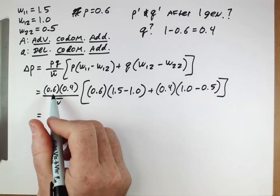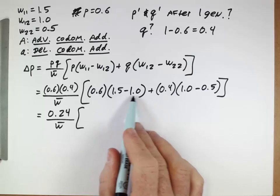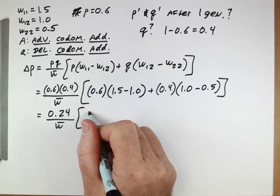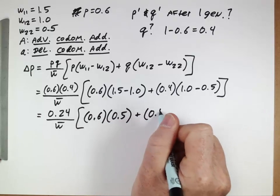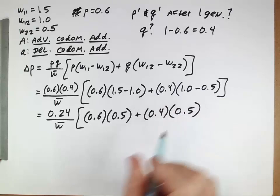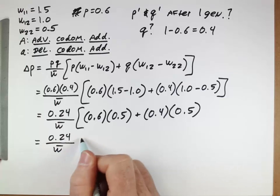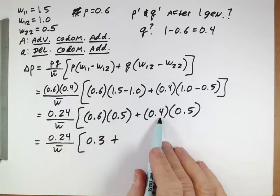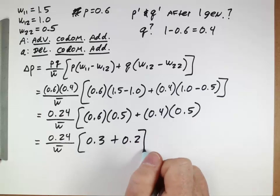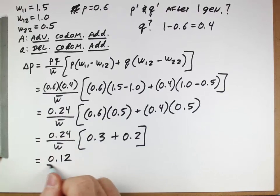So we can simplify the top part there, becomes 0.24 over w̄. This becomes 0.5, so we have 0.6 times 0.5, plus 0.4, 0.5. 0.6 times 0.5 is 0.3, 0.4 times 0.5 is 0.2. So if you add this, that's 0.5 times this, you'll get 0.12 over w̄.